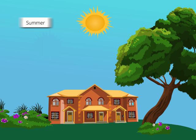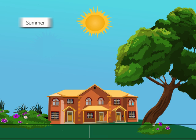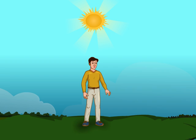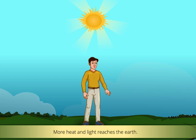During summers in India, which is generally from the month of March to June, the upper half of the Earth is tilted towards the Sun. As a result, the days are longer than the nights and the Sun remains in the sky for a longer duration. The Sun rays fall straight and directly on the upper half of the Earth, making more light and heat reach this part.